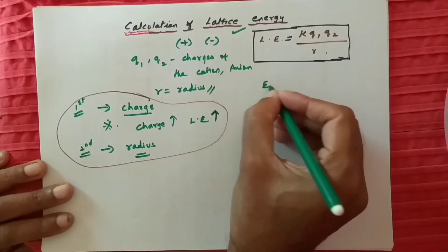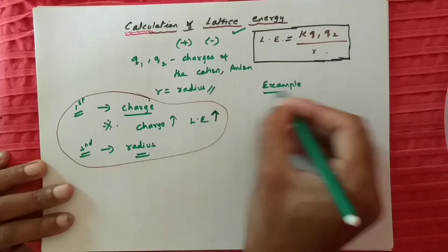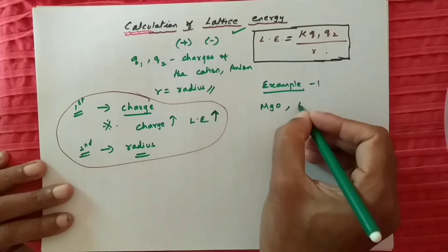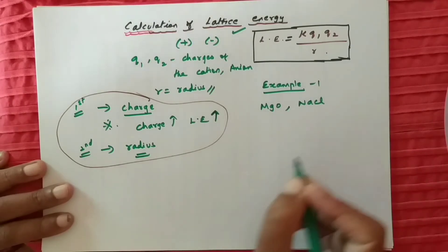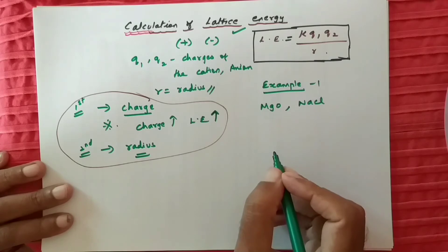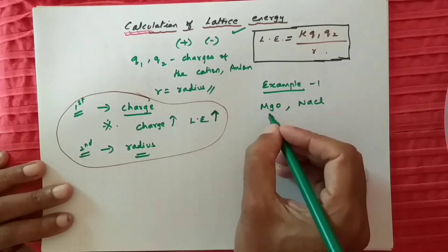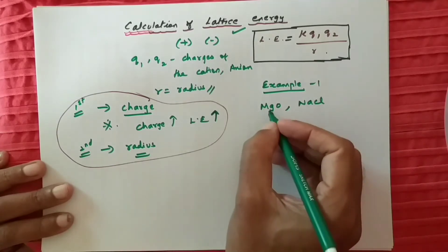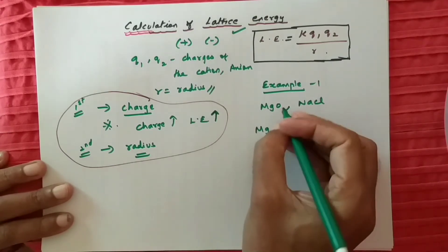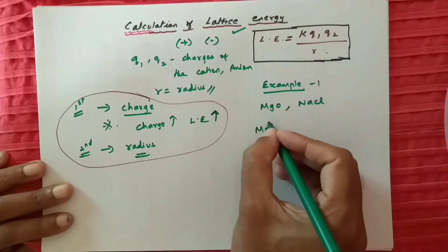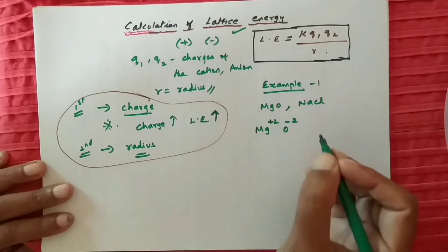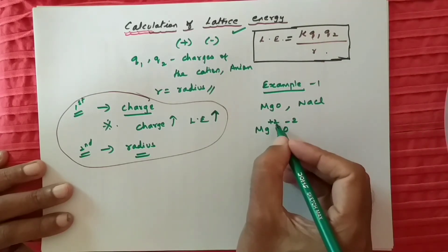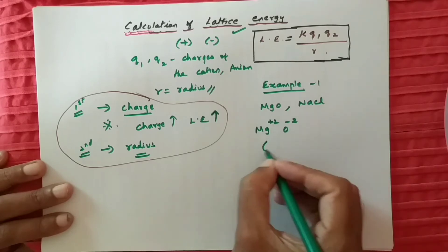For example, take MgO and NaCl — which is having greater lattice energy? In the case of magnesium, it is a Group 2 element, so the charge will be +2. Oxygen's charge will be −2. So the product of charges q1 × q2 is +2 × −2, which gives a magnitude of 4.